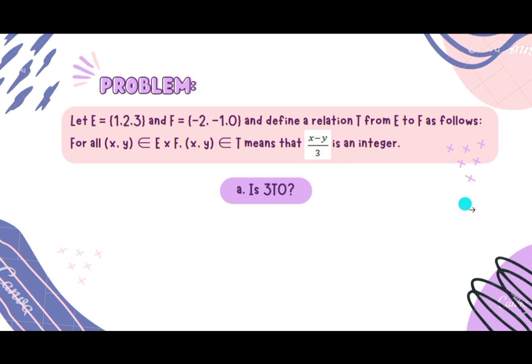It will be (3 - 0)/3. 3 minus 0 equals 3, divided by 3, which equals 1. 1 is an integer, meaning that it doesn't have decimals. So the answer is yes. 3 is related to 0 because it satisfied the given rule.